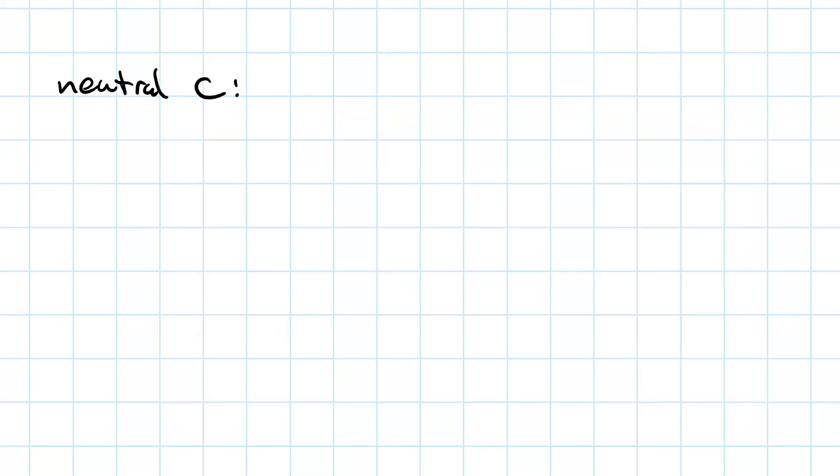Neutral carbon has four bonds. It can be four single bonds, or it can be a double bond and two single bonds, or it can be two double bonds, or it could even be a triple bond and a single bond. The important thing is that there are four bonds.